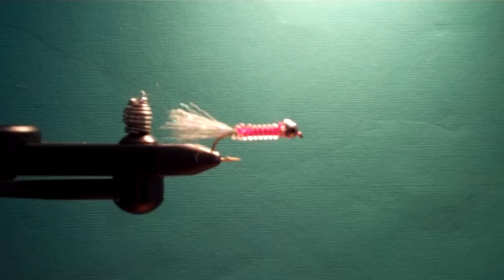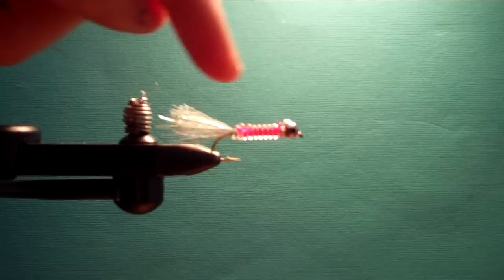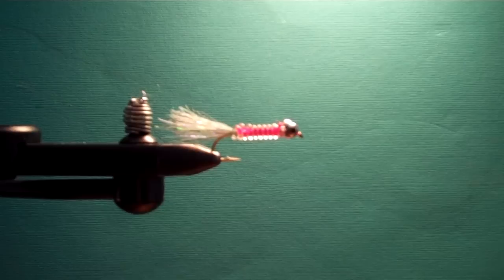Thanks for clicking on this video. I'm going to tie for you a basic shad fly. Just a couple of ingredients in this one. It's got a tail made out of polar flash, a thread body wrapped with some clear vinyl stretch, and dumbbell eyes.